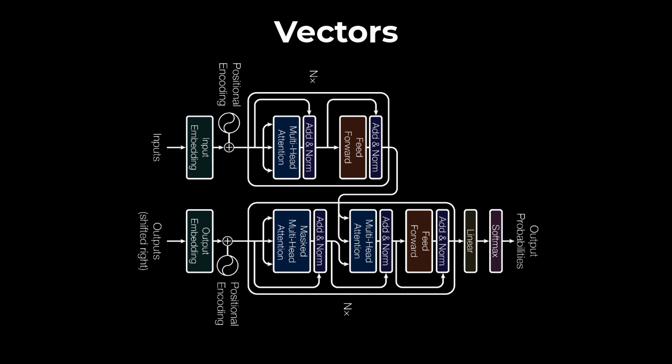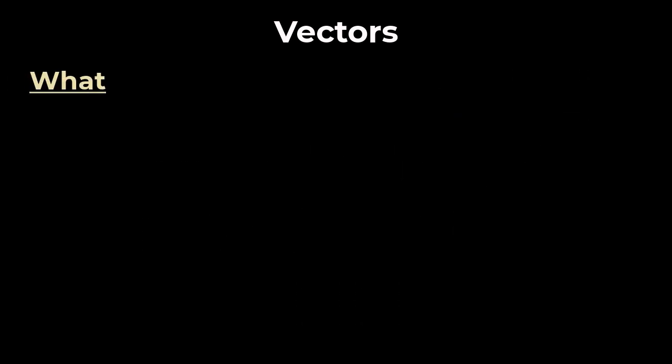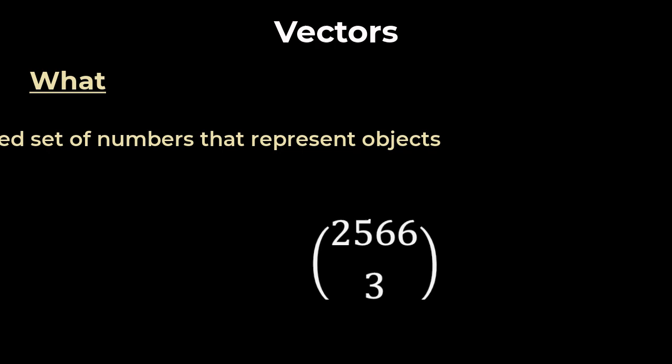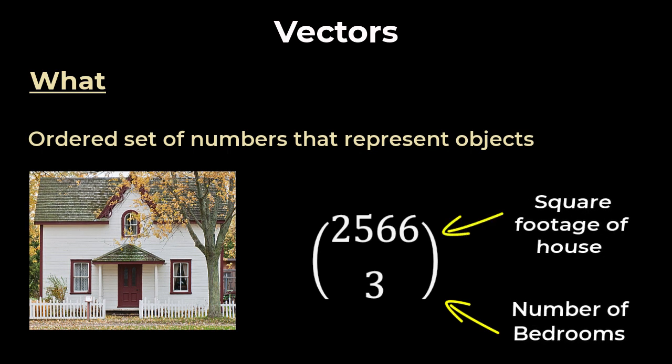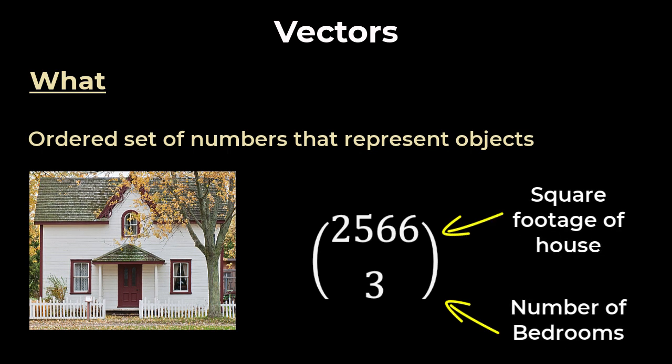So, let's talk about vectors. What are vectors? Each vector is an ordered set of numbers that represent an object that we understand. Each number in a vector represents different characteristics of that object. If this vector represents a house, the first number could represent square footage, the second number could represent number of bedrooms, and so on. The length of this vector depends on how many numbers you need to adequately represent that object. If I think two properties is enough to represent a house, then we have a two-dimensional vector for every house.